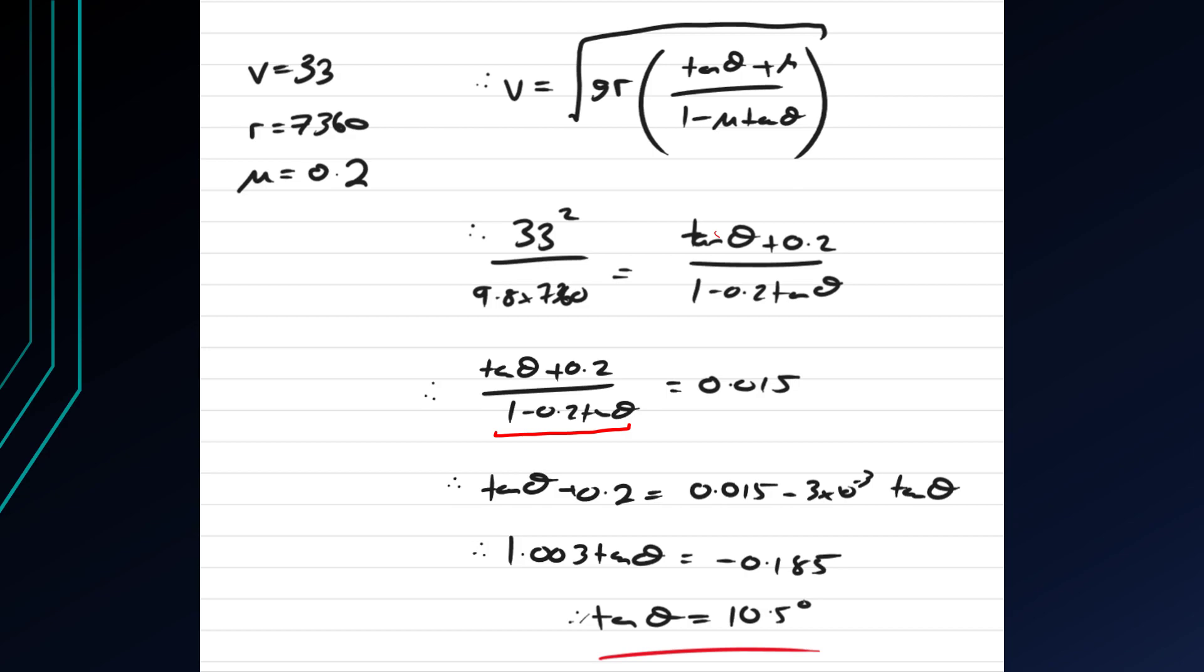So adding the tan thetas and taking away the 0.2 we get 1.003 tan theta is minus 0.185 which gives tan theta as minus 10.5 degrees.